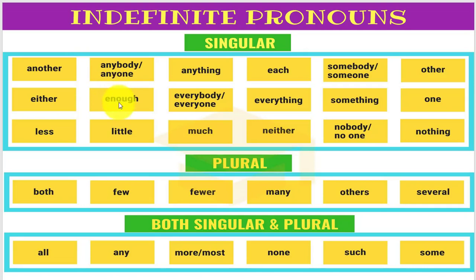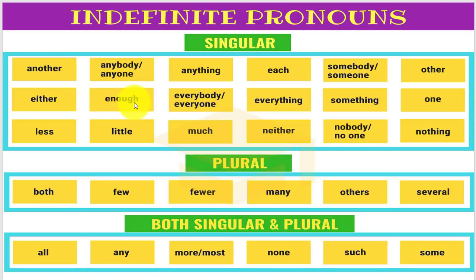Another example: 'Enough has been said about democracy and Pakistan.' You cannot say 'Enough have been said.' So 'enough' is treated as a singular pronoun. Similarly, 'Nothing has changed in this government' — 'nothing' is treated as singular, not plural.